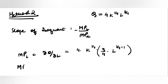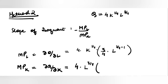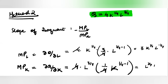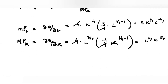Similarly, find MPK — this is how output changes when capital changes. Differentiate with respect to k holding l constant: 4l to the power 3 by 4, and then differentiating k to the power 1 by 4 brings the power down, giving k to the power 1 by 4 minus 1. This simplifies to 3k to the power 1 by 4 l to the power minus 1 by 4, and MPK equals l to the power 3 by 4 times k to the power minus 3 by 4.